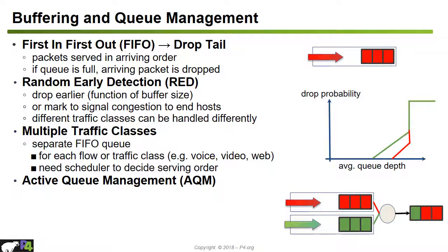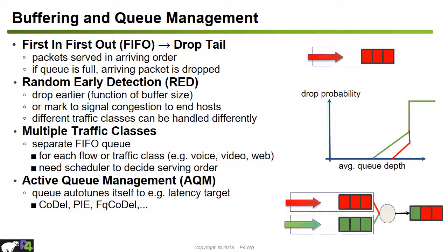In this example, the red queue holds voice packets and the green queue holds video packets; the scheduler decides which queue to serve — here it serves two red packets before one green packet. Recently, active queue management (AQM) has been studied, where queues auto-tune their parameters to maintain a stable queuing latency target, rather than requiring manual configuration of drop probabilities as in RED. Examples of AQM schemes include CoDel, PI, and FQ-CoDel.